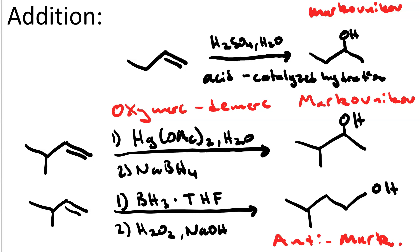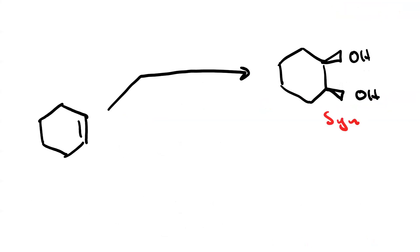We can also make diols via addition. If we have cyclohexene and we treat it with a particular reagent, we get the syn-diol. What reagent was that? The greenest way to go is probably potassium permanganate in cold, or osmium tetroxide in a catalytic amount with NMO. Catalytic OSO4 with NMO, that's syn-dihydroxylation. You get the syn-diol.